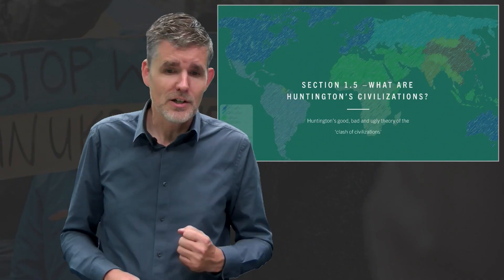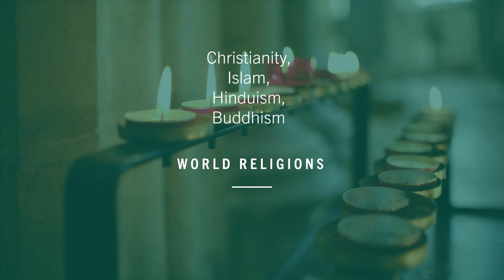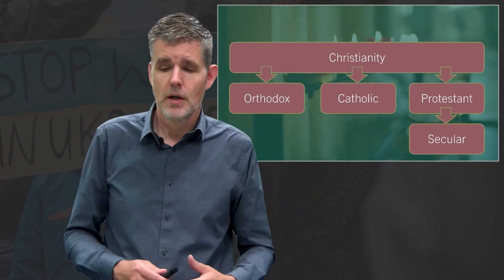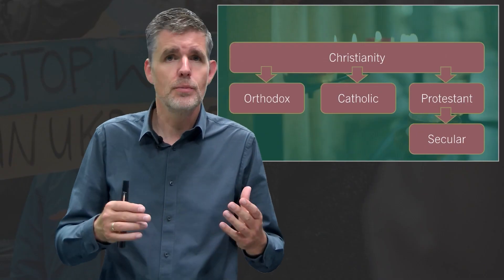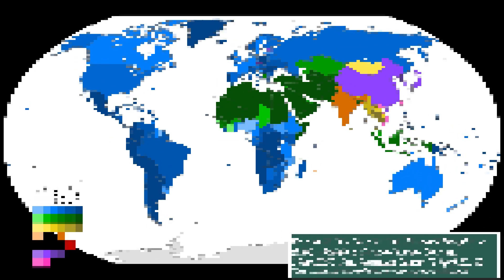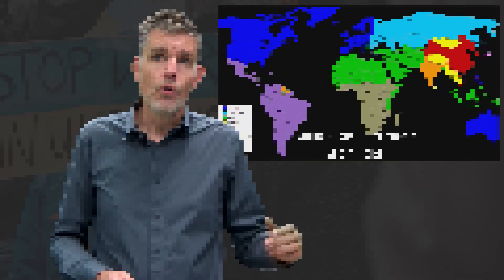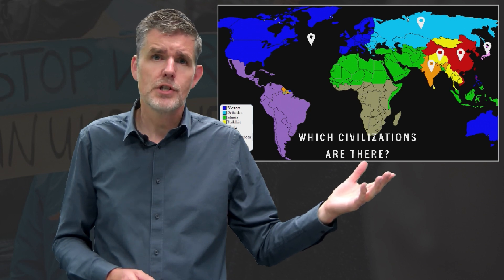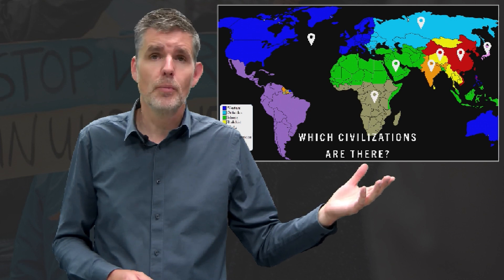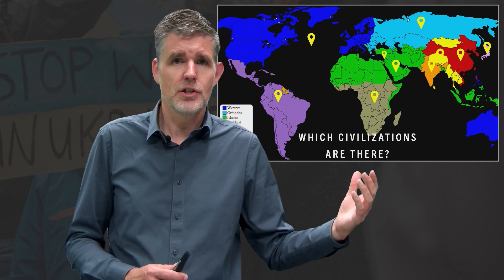I've made a course on Udemy to explain everything about the Clash of Civilization theory, but I will share some of it here. Huntington drew his map based upon the dominant religion in areas, and so Huntington presents us this map where the Western civilization clearly dominates the rest — 10 distinctive civilizations.